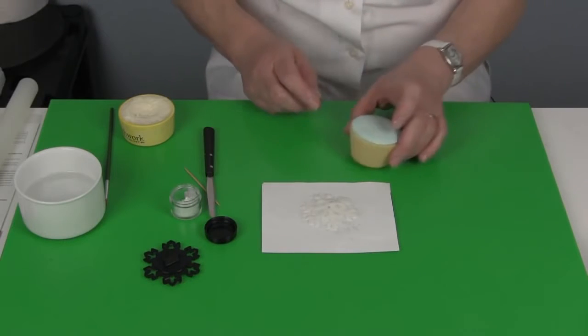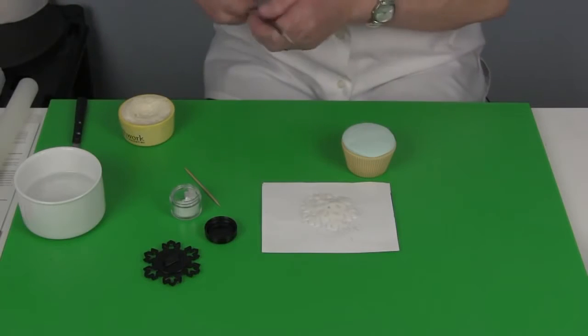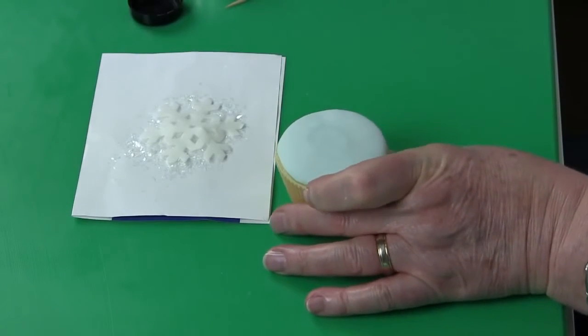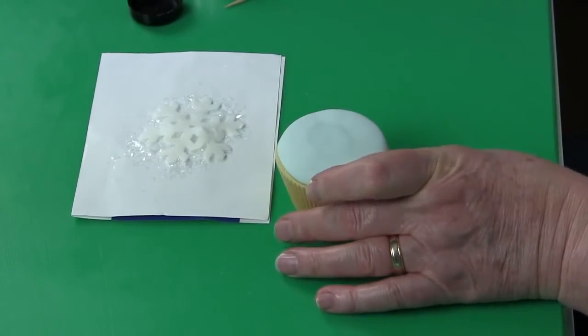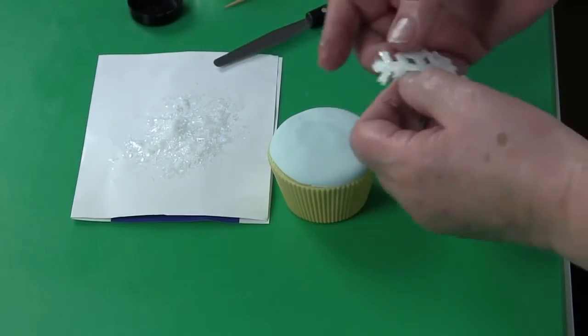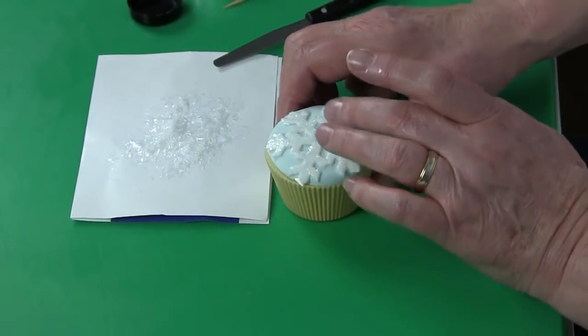And I already have a coated cupcake, so I'm going to use a little water on there. You don't have to moisten the whole thing, but just enough to catch the center of the snowflake. And then you lift the snowflake and place it onto your cupcake and it's as simple as that.